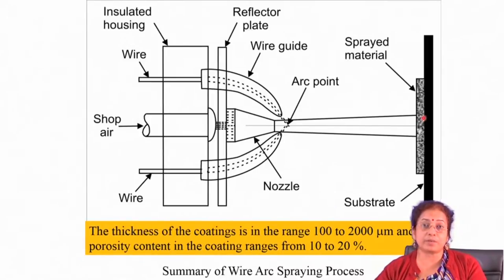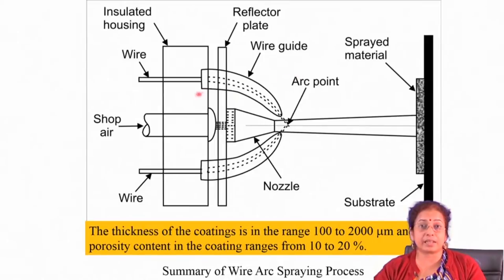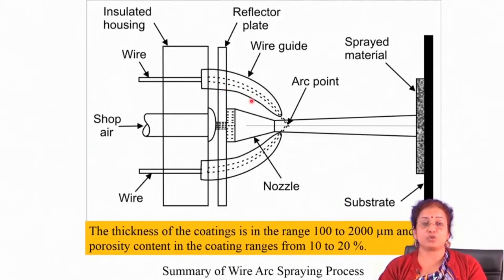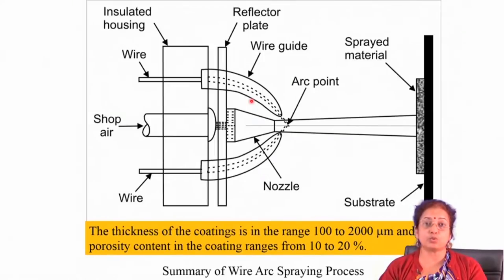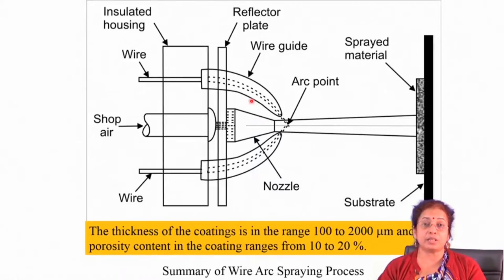The key variables in arc spray deposition include the wire feeding rate, which must be optimized. If the wire feeding rate is higher than the rate at which it is consumed, there will be short-circuiting. If it is lower than the consumption rate, no arc will be generated. The wire feed rate must be standardized to ensure proper arc generation and melting of the material.